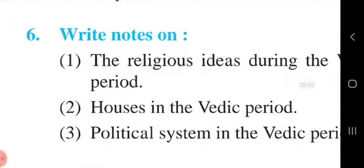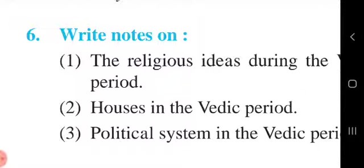Reading the political system answer again: Gramani was a village headman. Vishpati headed a group of villages. A number of Vishes constituted a Janapad. Nripa was the head of the Janapad. The king appointed officials to assist him; Senapati and Purohit were most important. Bhagadukha was appointed to collect revenue. Sabha, Samiti, Vidhat, and Jana deliberated on state affairs and guided the king.